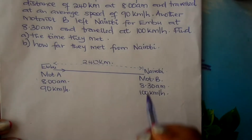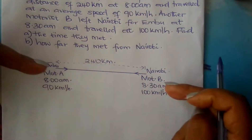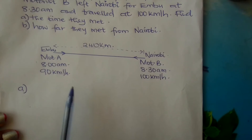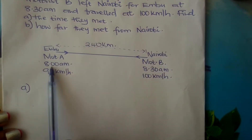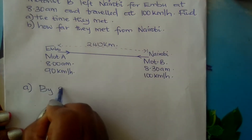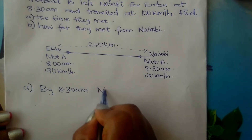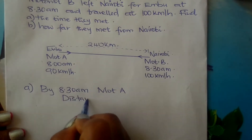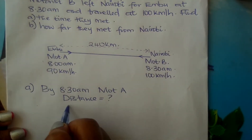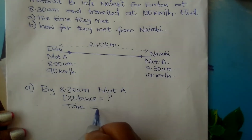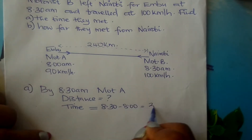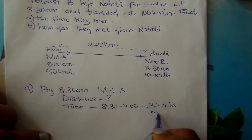They are moving towards each other, so find the time they met. The first thing in such a problem is to equate the times. Motorist A left at 8 am and motorist B left at 8:30 am. By 8:30 am, motorist A will have already covered some distance because he left earlier. The time taken by motorist A is 8:30 minus 8:00, which is 30 minutes — the same as half an hour.